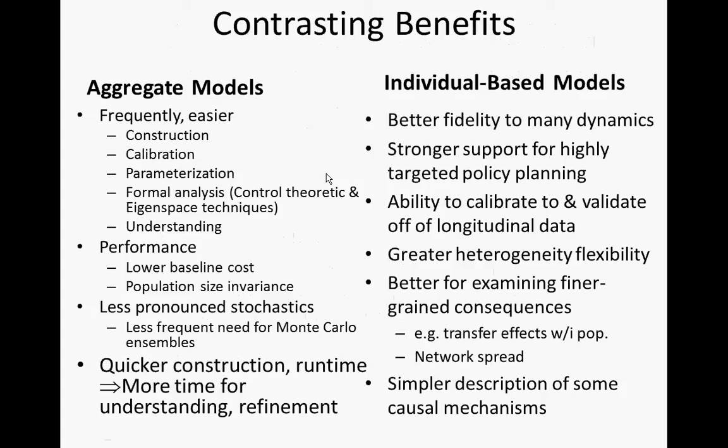Models are built for different purposes. One of the biggest distinctions is whether you're modeling for learning, for qualitative insight, and just roughly trying to explain things — where you're dealing with a caricature of the world — or are you trying to quantitatively predict in a much richer way, which requires commensurately greater detail. Aggregate models are easier to construct, calibrate, and parameterize. We can do formal analysis on them. They're easy to understand because there are fewer moving parts, and they have much better performance.